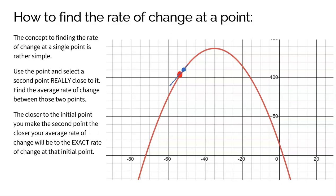Now that's not the tangent line I'm looking for — that would actually be a secant line. But the theory is that since that second point is really close to the first point, the average rate of change between these two points should be really close to the rate of change at the specific point I'm trying to find. And in fact, if I pick a point closer and closer to my original point, the average rate of change between the two points will be closer and closer to the exact rate of change at that point.